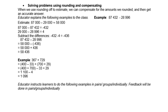Next, we find the differences from rounding: 87,000 minus 87,432 gives negative 432, and 29,000 minus 28,996 gives positive 4. Adding those two differences: negative 432 plus negative 4 gives negative 436. So the final answer is 58,000 minus negative 436, which equals 58,000 plus 436, giving us 58,436.